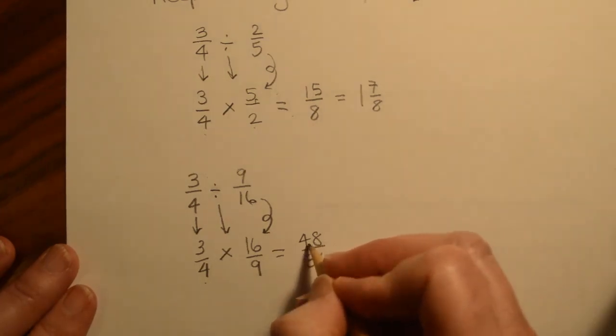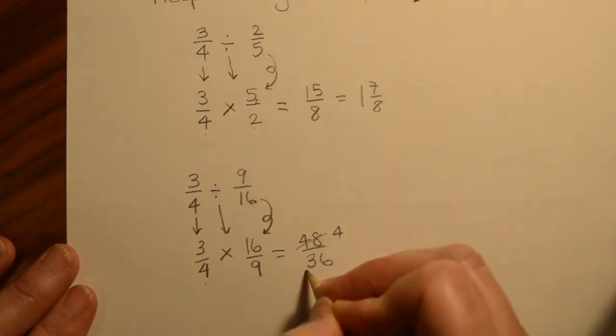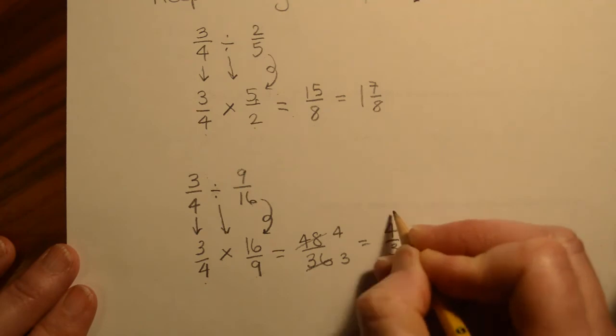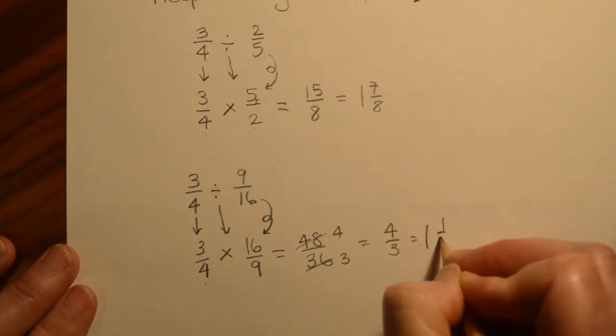And notice that both of these have a 12 in it. So that would go in 4 times. That would go in 3 times. That would be 4/3. Again, improper fraction. That would be 1 and 1/3.